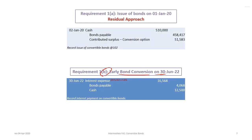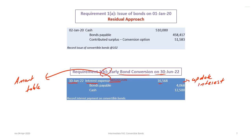Next, requirement 1b is to record the bond conversion on June 30th, 2022. Before the actual conversion, we must first update interest. From the amortization table, the value of the bonds just prior to conversion is $473,537, and we multiply by 3.5%. The journal entry is: debit interest expense $16,568, credit cash $12,500, and credit bond payable $4,068 for the difference.